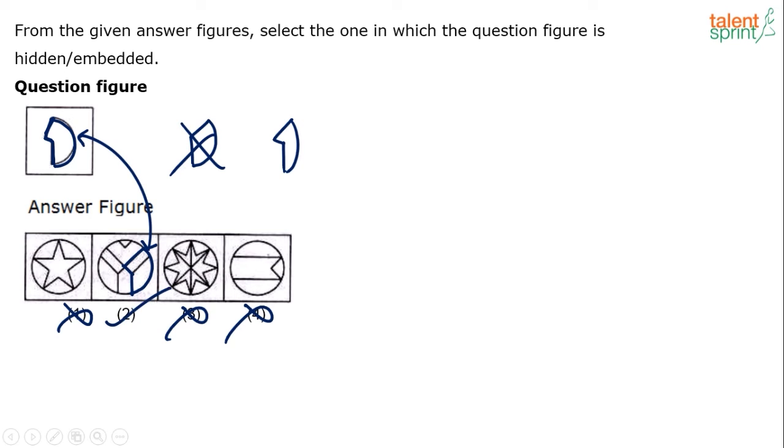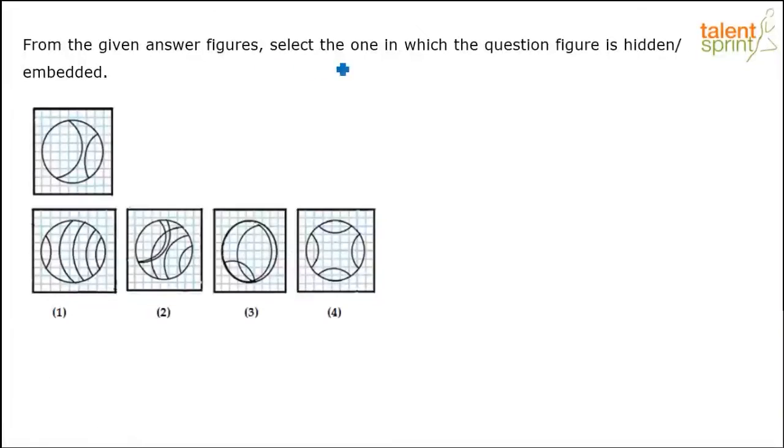Option two is the answer here. From the given answer figure, select the one in which the question figure is hidden or embedded. This is the question figure basically. We have to find out in which of these answer options is the question figure embedded or hidden. We are looking for this shape. In which option is this shape available?